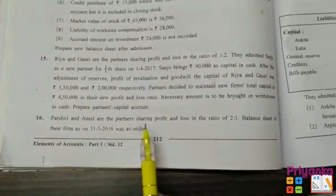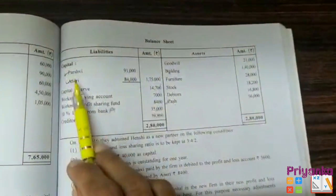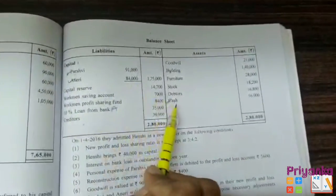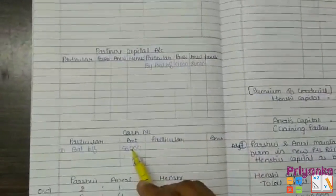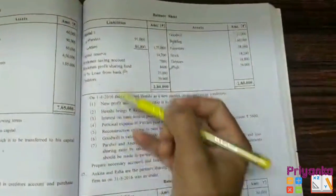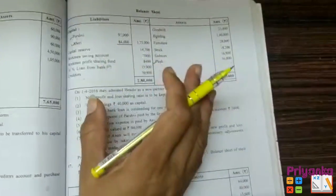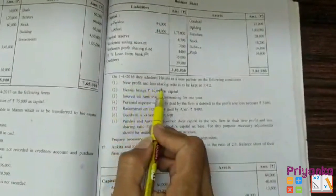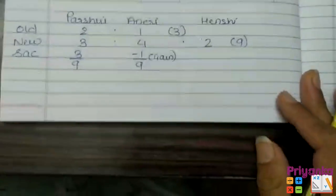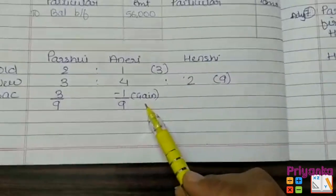Question No. 16. Parsvi and Aniri are partners sharing P&L ratio 2 is to 1, and the balance sheet is given. The opening balance has been written in the specimen — the revaluation account, partner's capital account, and opening balance are given beforehand. The first adjustment gives the new P&L sharing ratio as 3:4:2. From the old and new ratio, we find the sacrifice, where Parsvi is the only sacrificing partner and the other partner is gaining by 1/9.